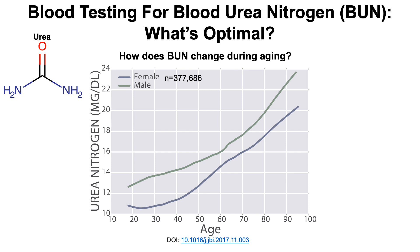In a study of about 378,000 subjects, we can see that lower levels of blood urea nitrogen are found in youth, with values of around 11 mg per deciliter in women and 13 mg per deciliter in men at around 20 years old. And slowly during aging, those values increase, such that a 90-year-old subject would have blood urea nitrogen values in the range of 20 to 23 mg per deciliter on average.